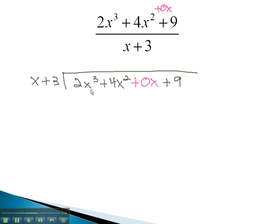Now, we begin our division. 2x cubed, divide out an x, gives us 2x squared. Multiplying by each term will give us 2x cubed, plus 6x squared. Changing the signs will allow us to combine, giving us negative 2x squared, plus 0x, when we bring down the next term.